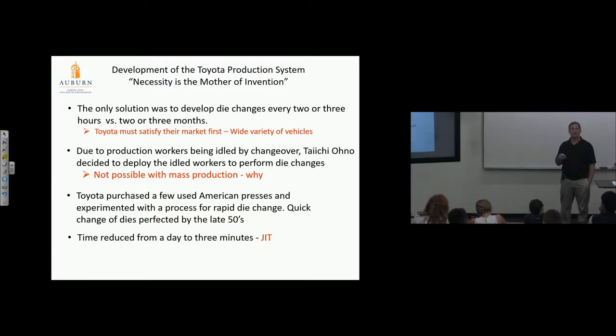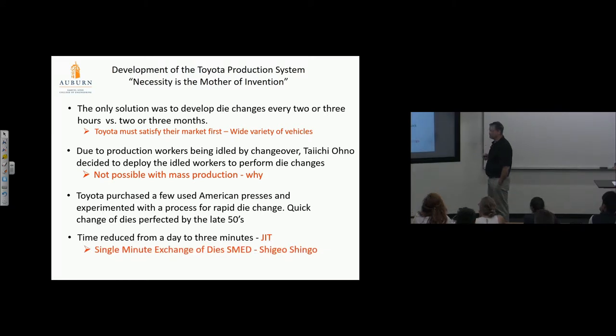Toyota purchased a few used American presses and experimented with the process of rapid die change. A quick change of dies was perfected in the late 80s, time reduced from a day to three minutes. So imagine that, a day to three minutes to change a die. A lot of engineering and a lot of thought and a lot of creativity has to go into being able to do that. And that was, if you recall, Shigeo Shingo was really the guy who really pushed that concept and helped Taiichi Ono implement it. Single-minute exchange of dies, you'll see more of this. There's a lecture on this. We'll talk about what that is. That's critically important. Do you think that all companies in manufacturing are practicing SMED now? No. It's amazing. You go out there in manufacturing, and you see they're just pounding out thousands of items of the same type.